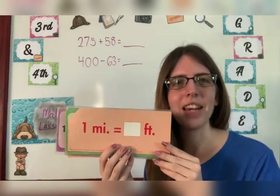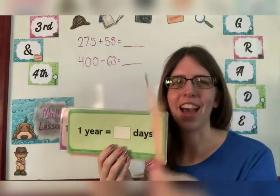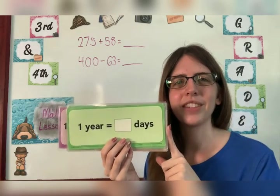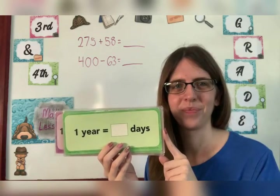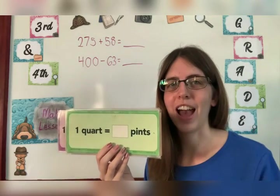One mile equals how many feet? Five thousand two hundred eighty. One year equals how many days? Three hundred sixty-five. Nice.